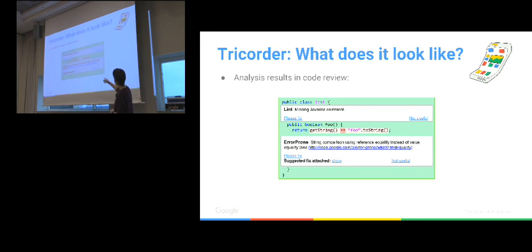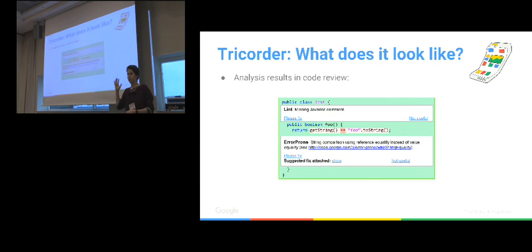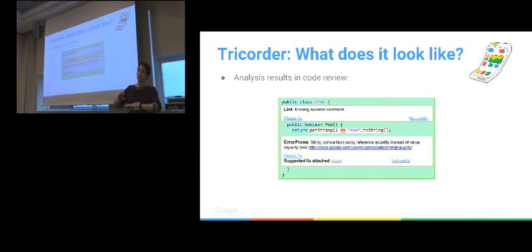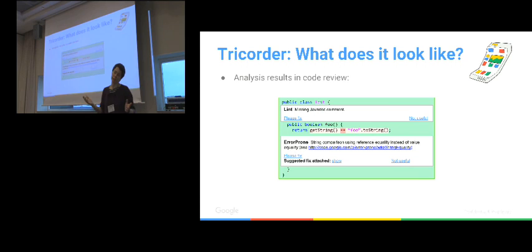Going through the different links: 'please fix' is a way for the reviewer to say, 'I'm reviewing this code, the robot is saying this, please fix what the robot is saying.' It's a way of saying to the author of the change: I also agree with what this robot is saying.